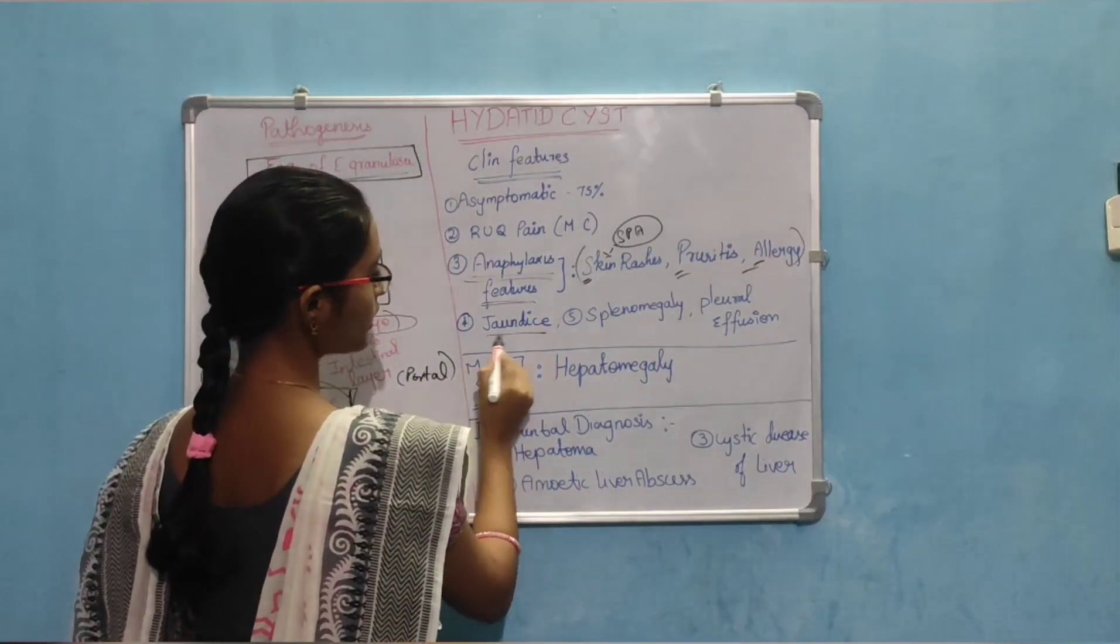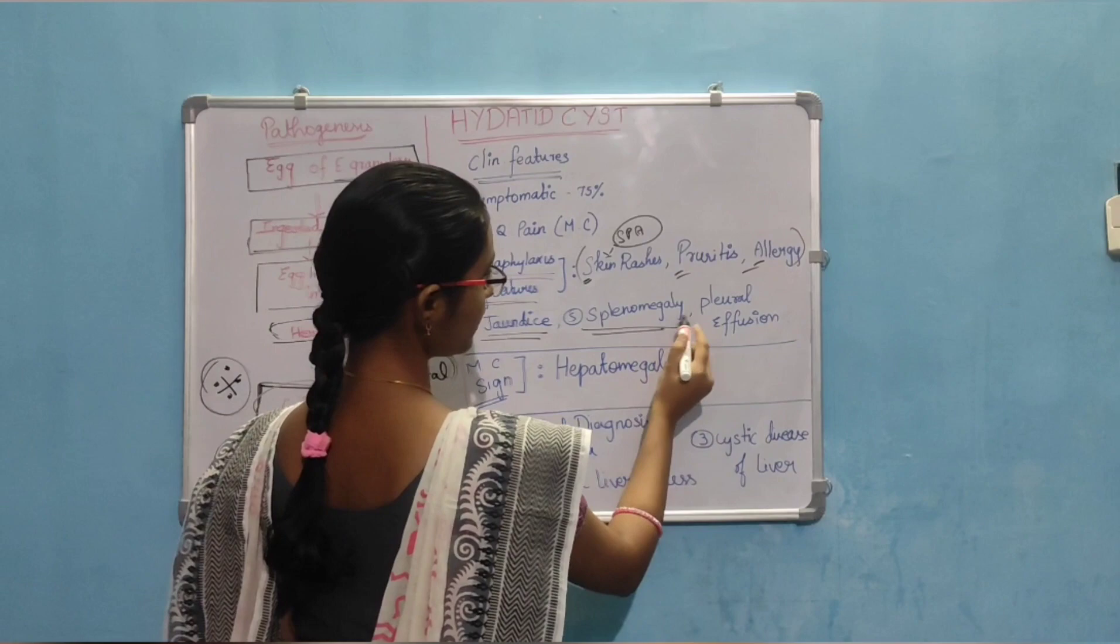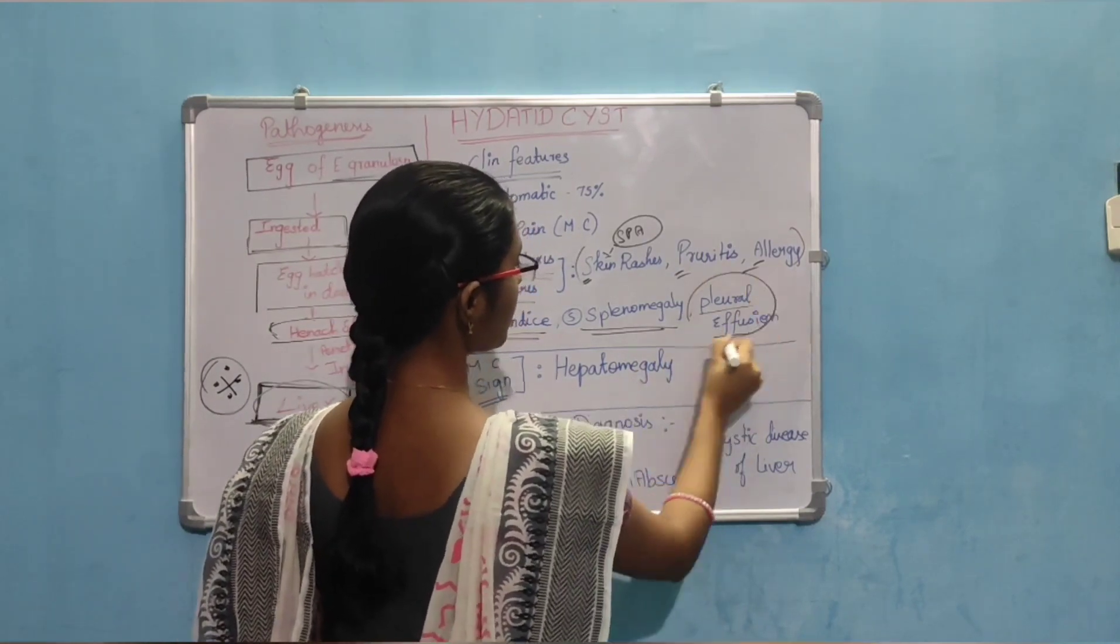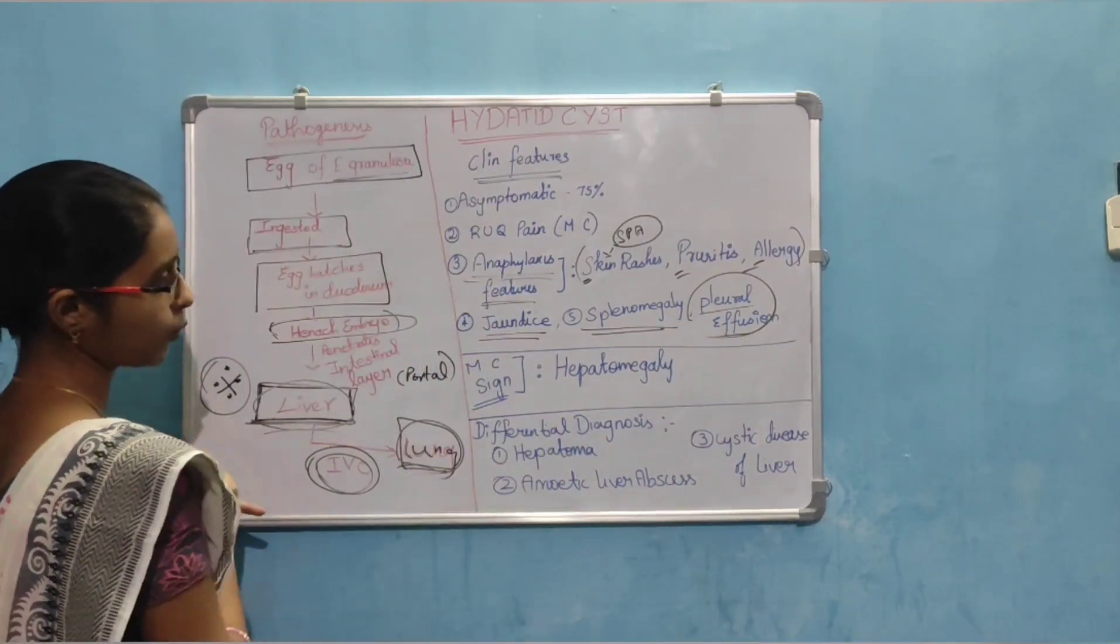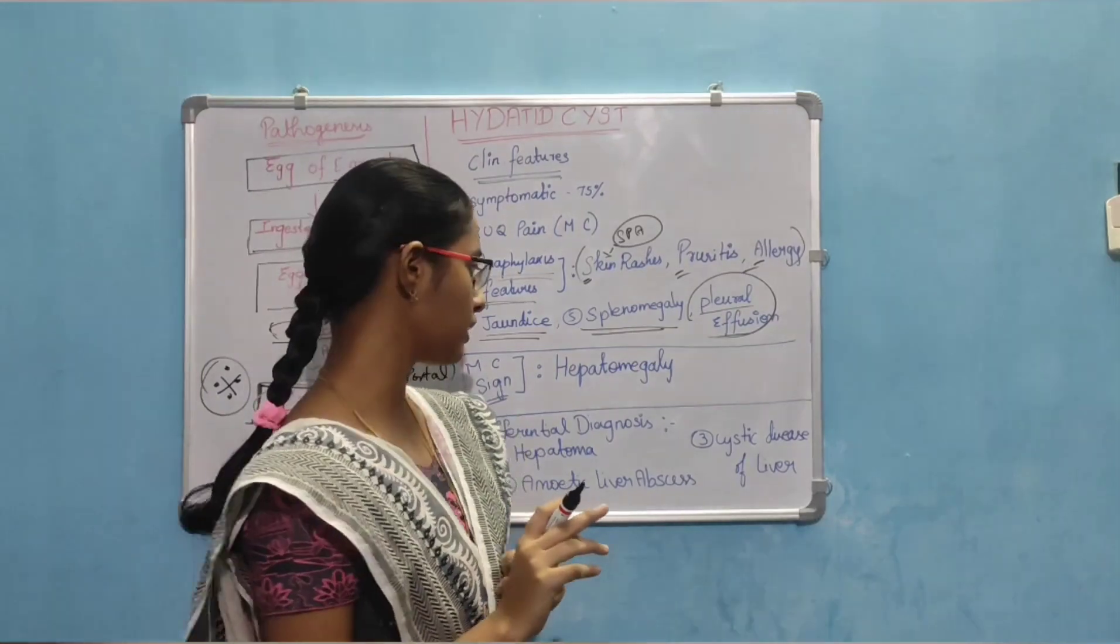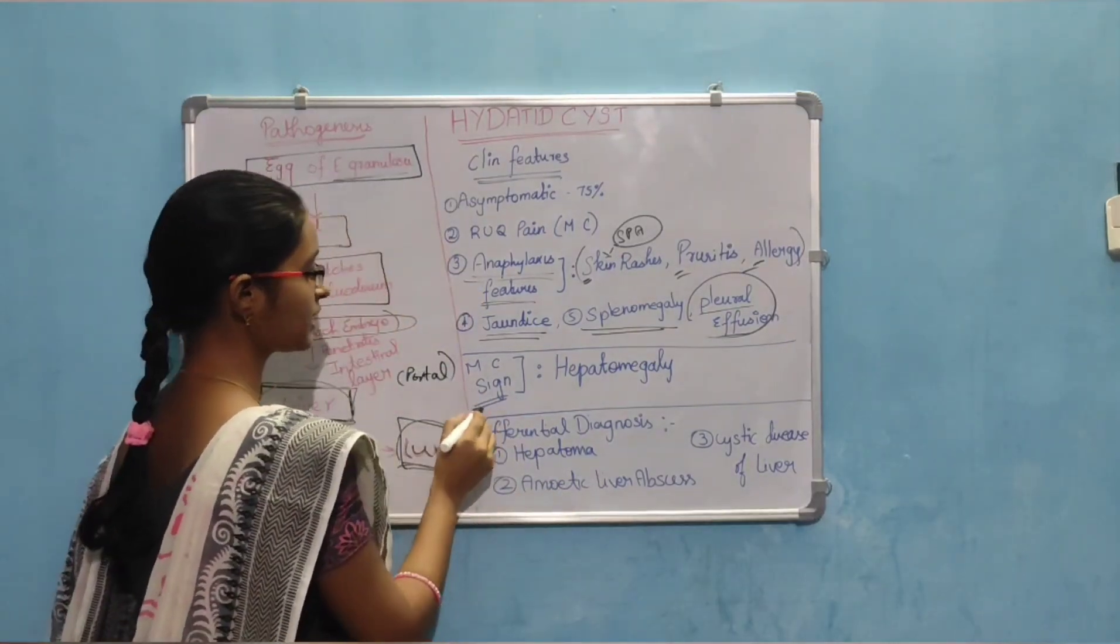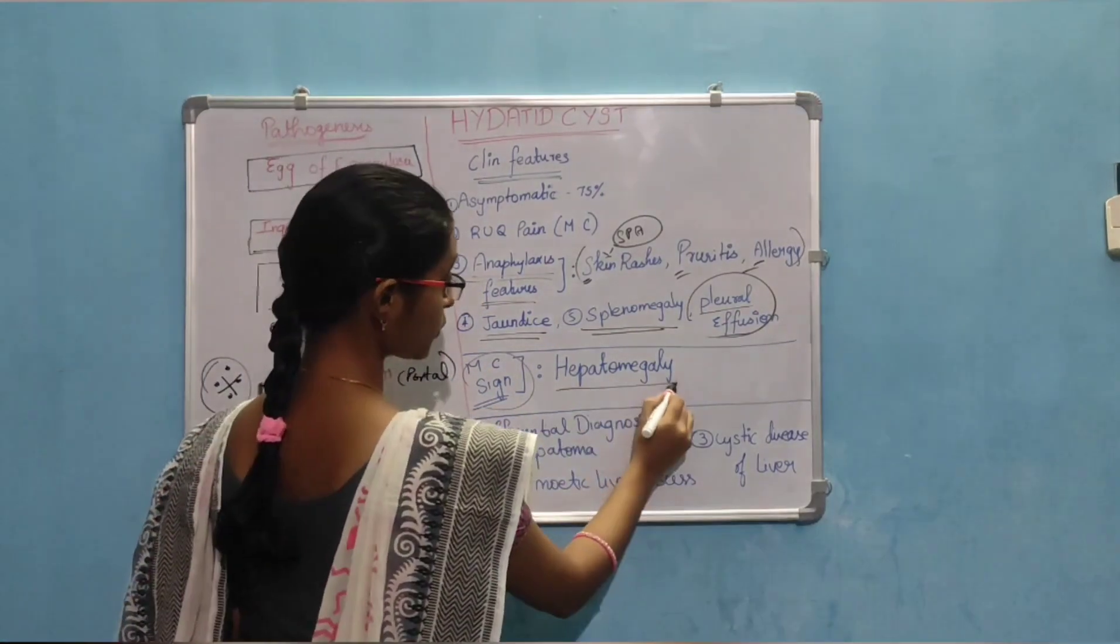And jaundice is present. Splenomegaly. And pleural effusion when lung is involved. So pleural effusion occurs. And the most common sign is hepatomegaly.